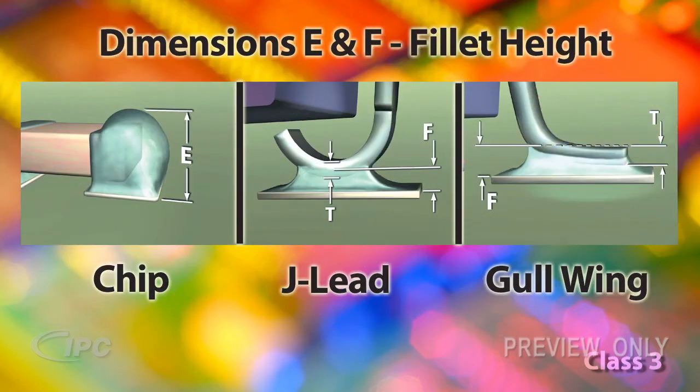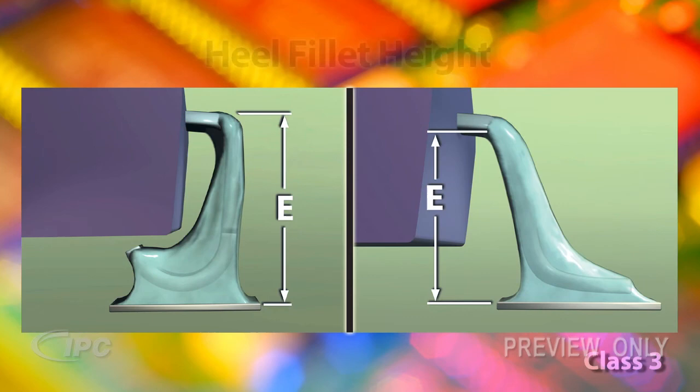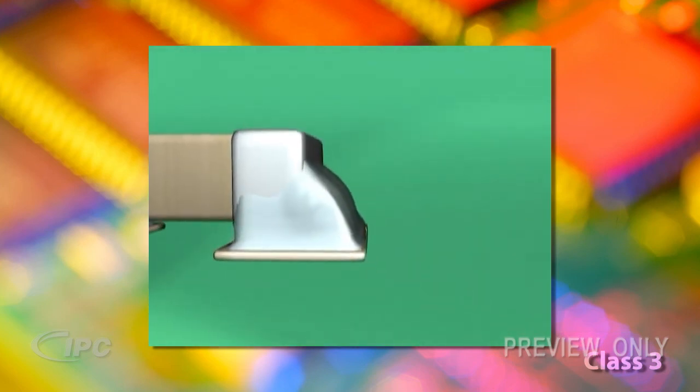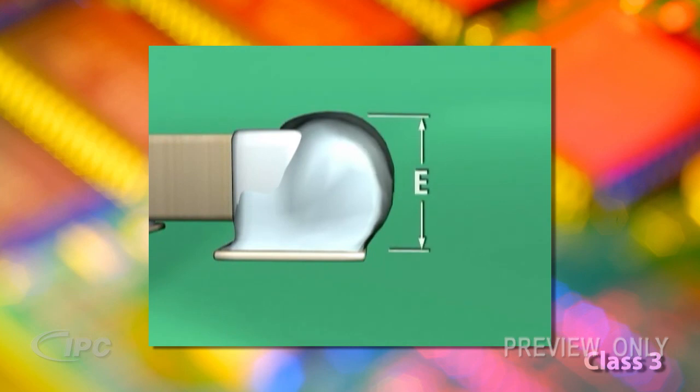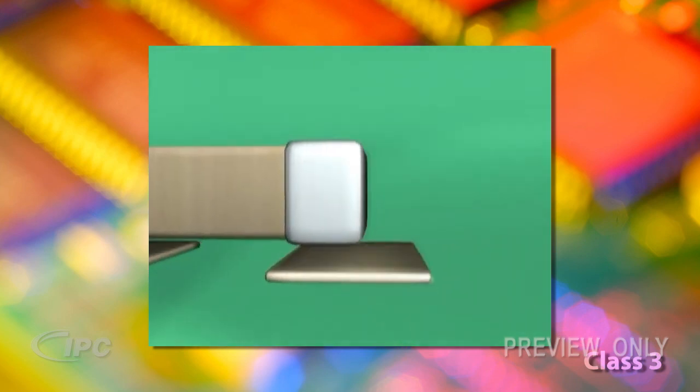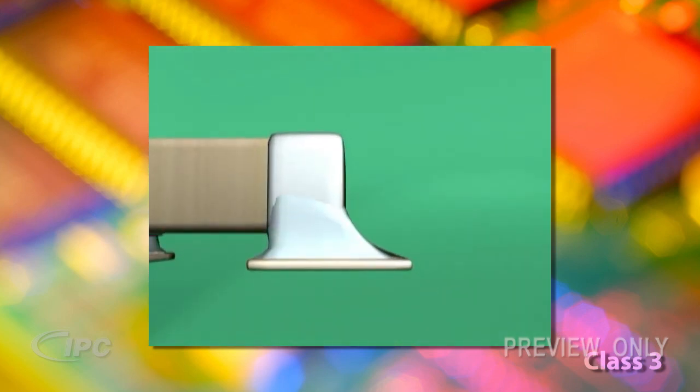Our next parameter is fillet height, which is specified by Dimensions E and F. These dimensions are called heel fillet height for J-lead and Gullwing components. For chip components, the solder may overhang the land and extend onto the top of the termination, but should never touch the component body. For Dimension F, the minimum fillet height should extend at least 25% of the height of the component termination, or 0.5 millimeters, whichever is less.